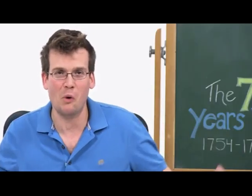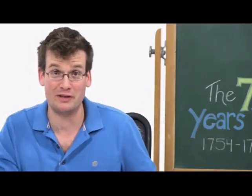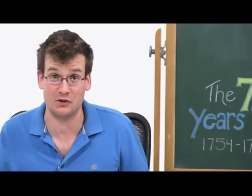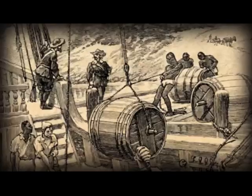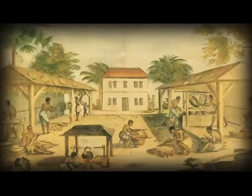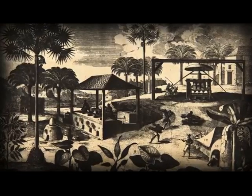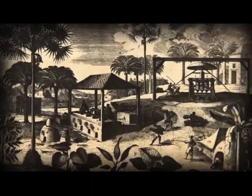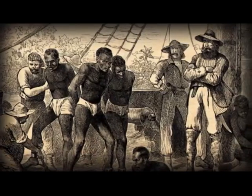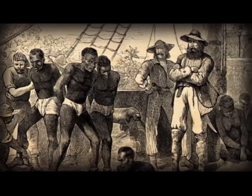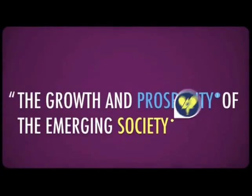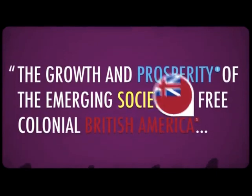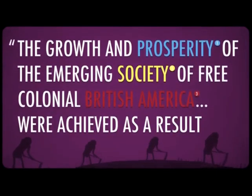But for it to work, you always need more and more land so you can have more raw materials and more colonists to buy finished goods. It's important to understand the centrality of slavery in this colonial economy. The most important colonial trade goods were tobacco and sugar, and both of those crops relied heavily on slave labor. As one historian put it, the growth and prosperity of the emerging society of free colonial British America were achieved as a result of slave labor.